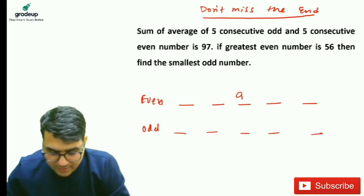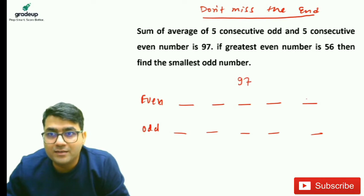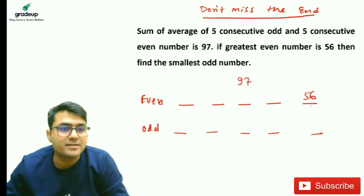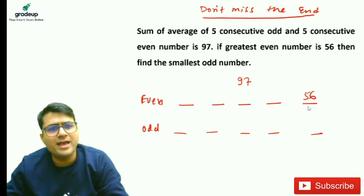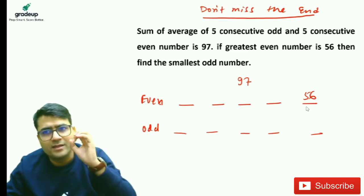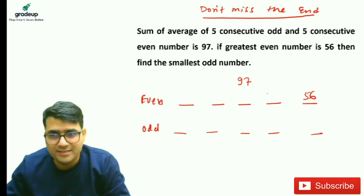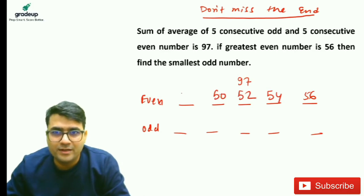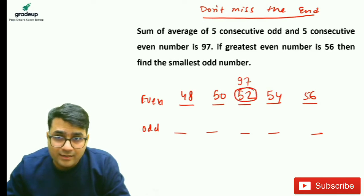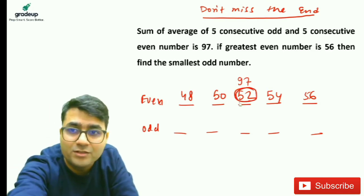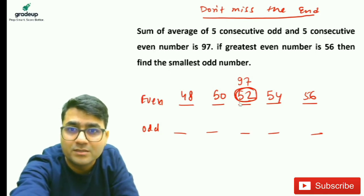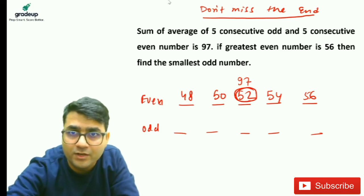We have the greatest even number. Since we have the greatest even number, I can write all the even numbers: 52, 50, and 48. I can definitely say the average of the even numbers is 52.